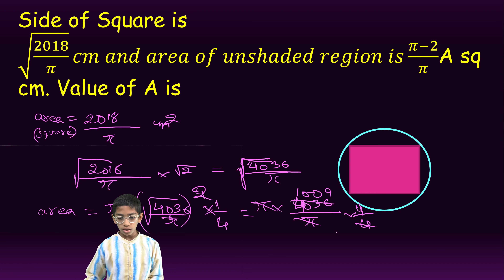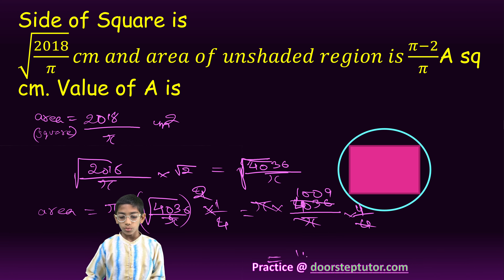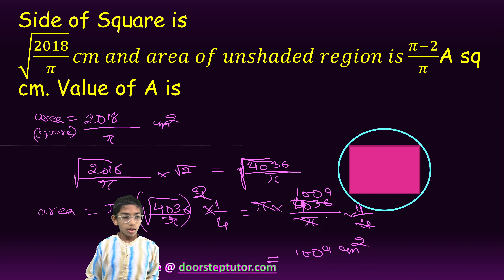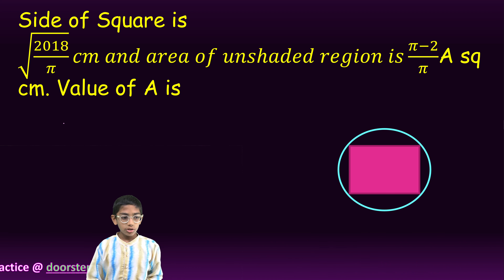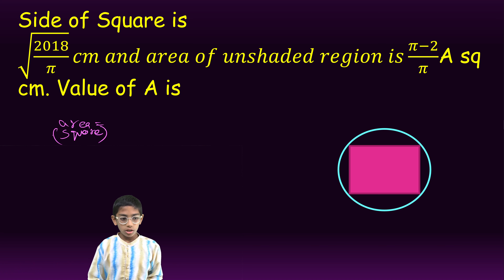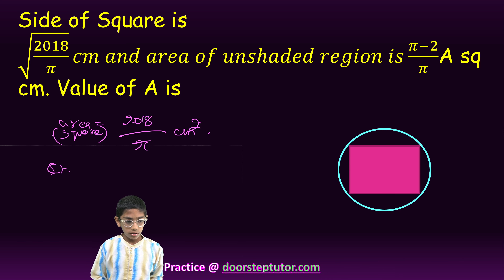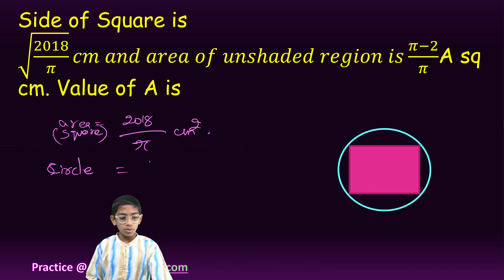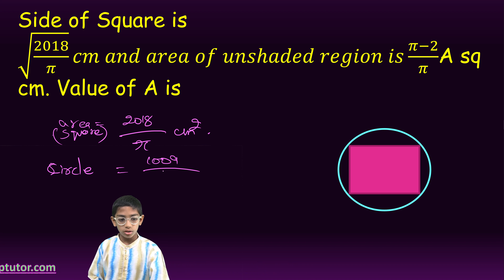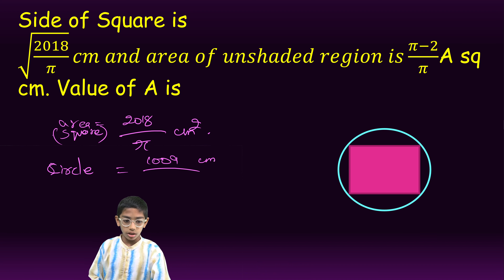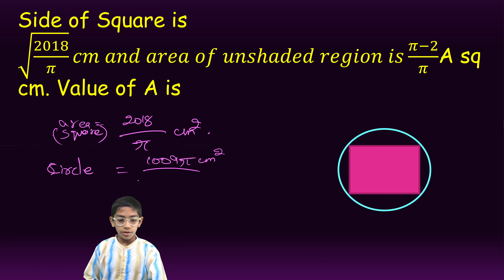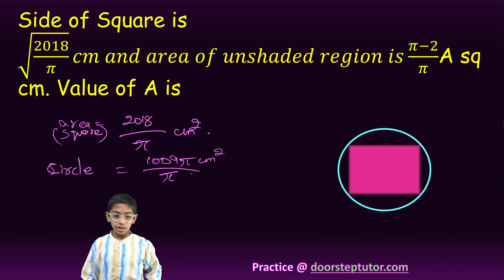So the area of the circle is equal to 1009 cm squared. Now writing the whole data again: the area of the square is equal to 2018 upon pi cm squared. The area of the circle is equal to 1009 cm squared, which we can also write as 1009 pi upon pi.